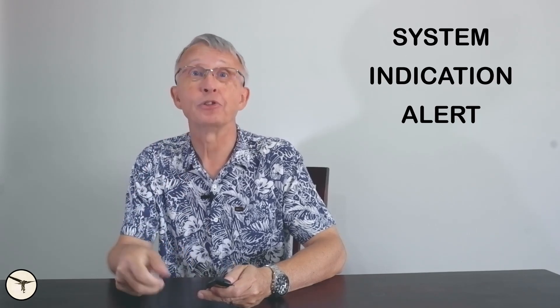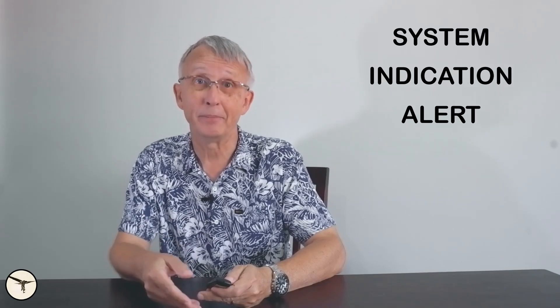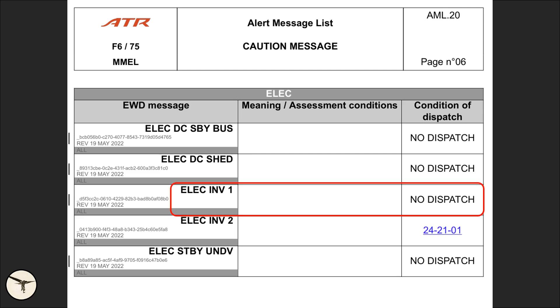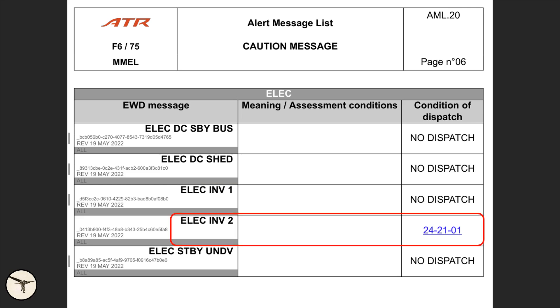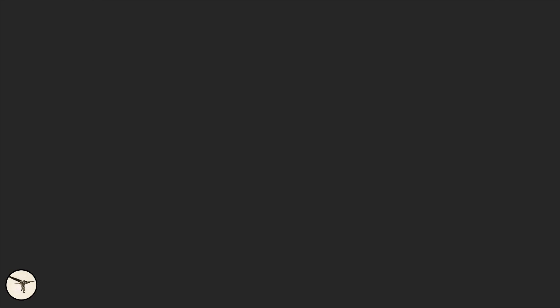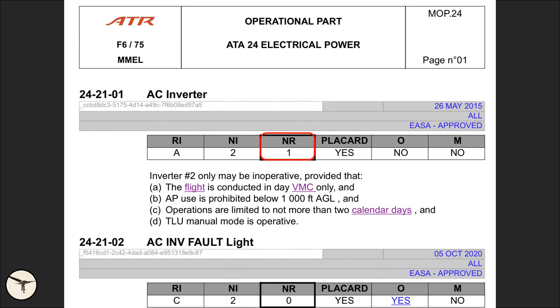One important thing to remember: a system can fail, a system indication can fail, and a system alert can fail. So it's very important to identify the correct item when you read the MEL. If inverter number one has failed, the alert message list says no dispatch. If inverter number two has failed, you follow operational procedure 2421-01. The rectification interval is A, operations are limited to not more than two calendar days. Two are installed, one is required for dispatch, and you need a placard. No operational or maintenance procedures are required.